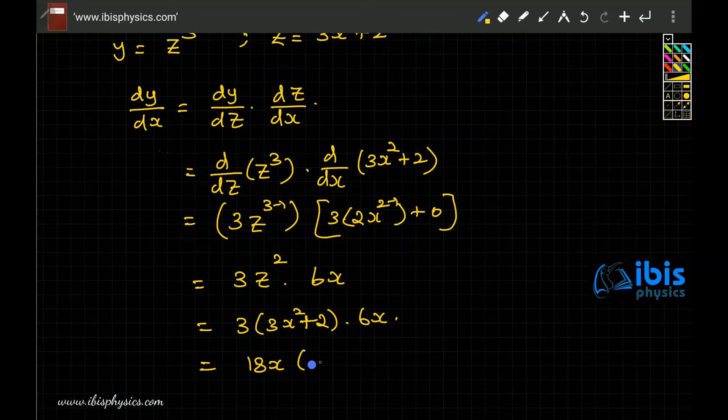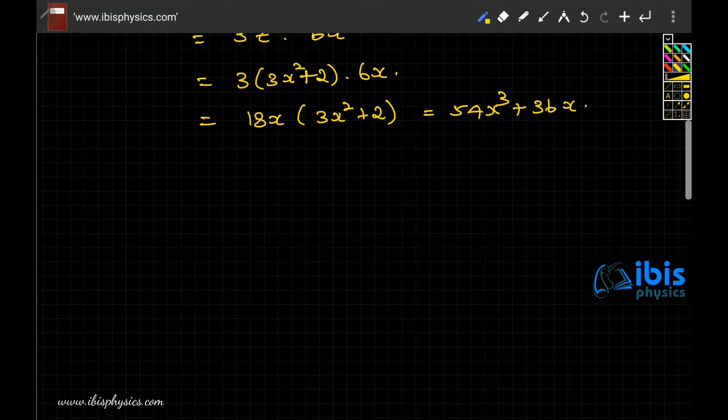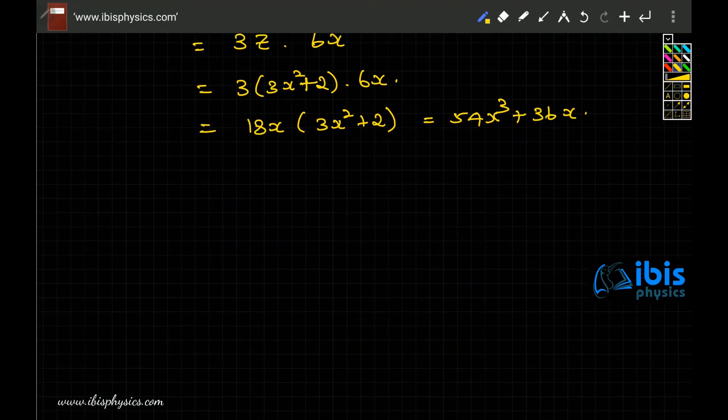Which is 18x times (3x² + 2) and so on. This can further be multiplied inside to give you 54x³ + 36x.